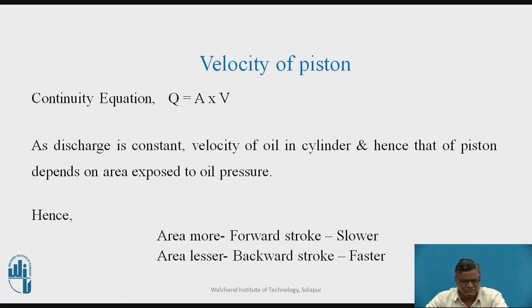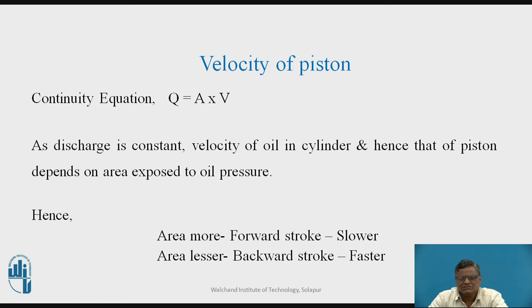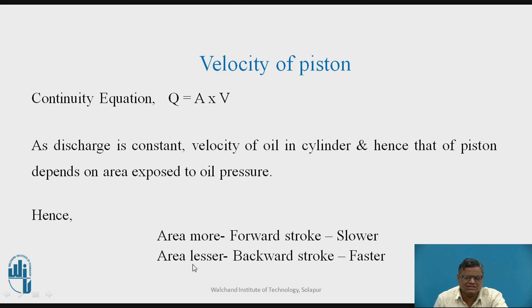Now consider the velocity of the piston. From the continuity equation studied in fluid mechanics: Q = A × V, where discharge Q is constant. Velocity is inversely proportional to area. During the forward stroke, the area is larger — the full piston area — so the velocity is slower. During the backward stroke, the area is lesser — piston area minus rod area — so the backward stroke is faster.